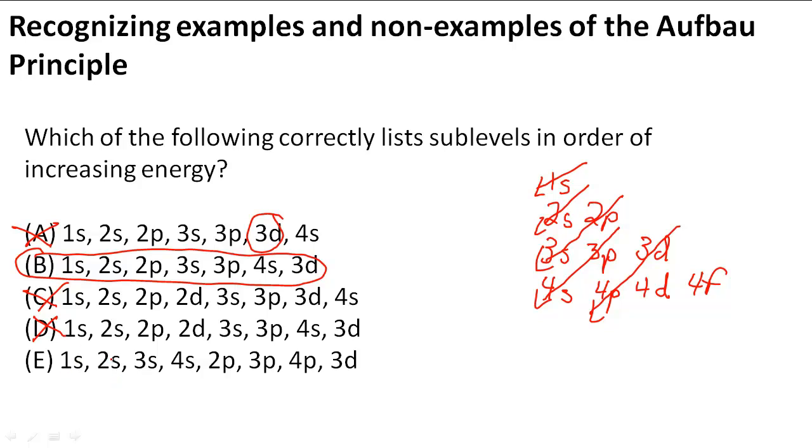And here this one is missing a 2p. So there's no 2p here. That means that E is out of the running. So B is the answer to our question about increasing energy.